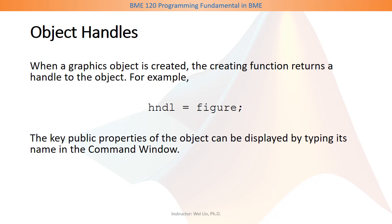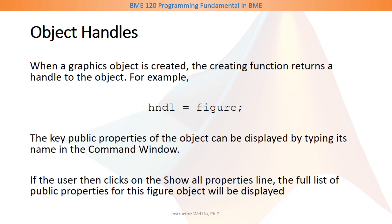The key public properties of an object can be displayed by typing its name in the command window. If you want to see the full list of properties, click on the show all properties line, and it will display the full list of public properties for that figure object in the command window.